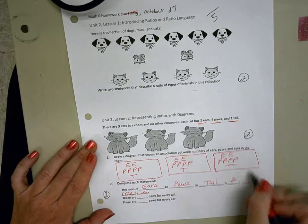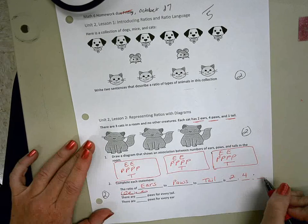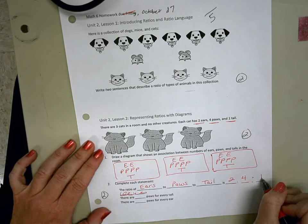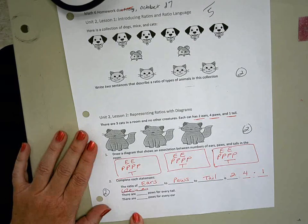Paws, paws is four, and tails is one. And then you're going to use this information to answer these questions.